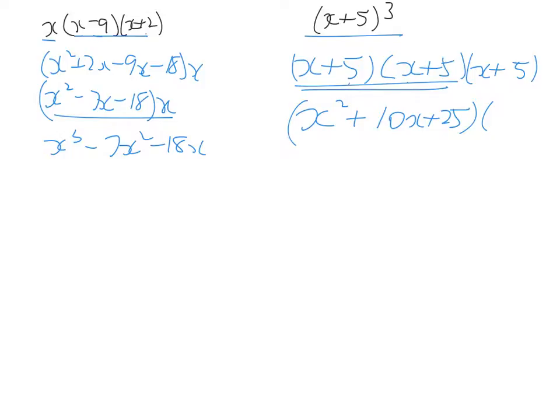And then from there, we've got x plus 5 as well. We multiply x plus 5 times x squared. We have x cubed. x squared times 5, we have plus 5x squared.